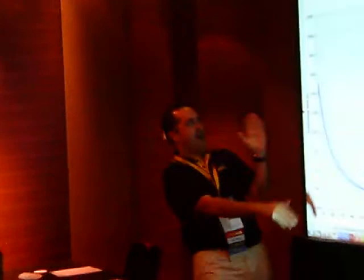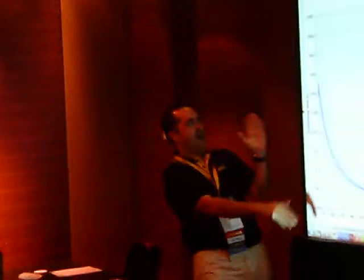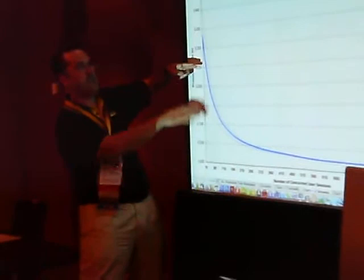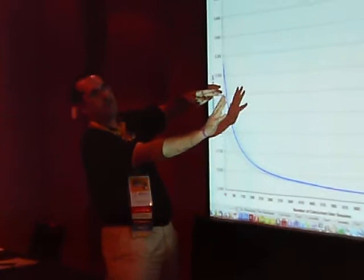Going up here: number of milliseconds processing time. Going across here: number of concurrent user sessions your server is likely to be able to process. Really important. If you're at 250 milliseconds, then statistically, this is a 99% line — 99% of your requests are going to be serviced in less than two seconds at this point.